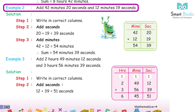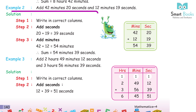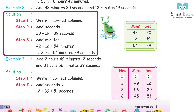Example 2: Add 42 minutes 20 seconds and 12 minutes 19 seconds. Step 1: Write in correct columns. Step 2: Add seconds — 20 + 19 = 39 seconds. Step 3: Add minutes — 42 + 12 = 54 minutes. Sum = 54 minutes 39 seconds.